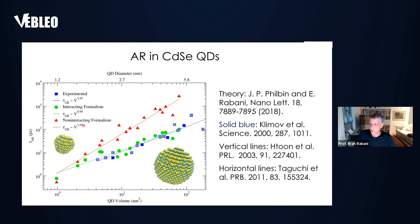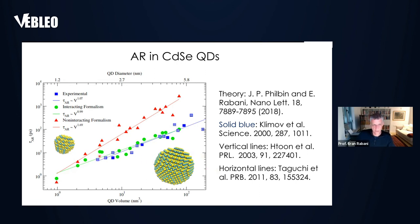When we include those correlations — our interacting formalism — the green symbols show very good agreement with a variety of experiments done by Klimov, Hatun, and other groups over a wide range of nanoparticle sizes. We can calculate Auger recombination lifetimes for experimentally relevant sizes without extrapolation. Even more impressive is the fact that we get the magnitude of the lifetime to agree with experiment. There is no adjustable parameter here — everything is done from first principles within the models and approaches we developed.